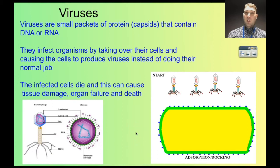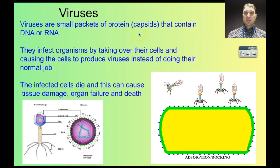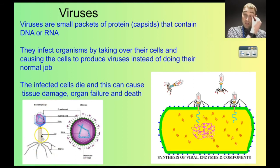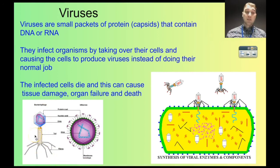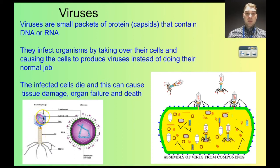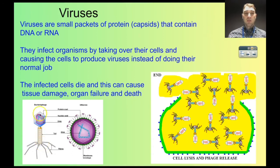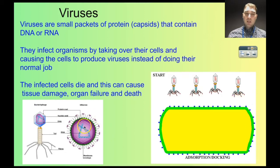We're going to start by looking at viruses. Viruses are small packets of protein called capsids, and inside that capsid you have some genetic information either in the form of DNA or RNA. Over here we have a bacteriophage — a t-even phage — where the capsid is at the top and contains DNA in this case. Here we have the influenza virus, and inside there it's got RNA instead, but again it's encapsulated with a capsid.